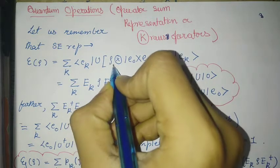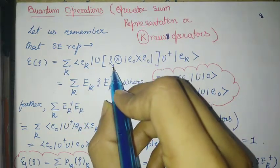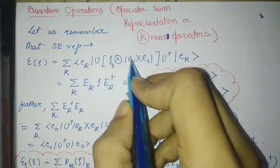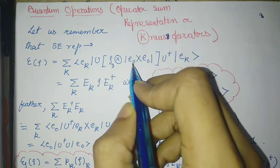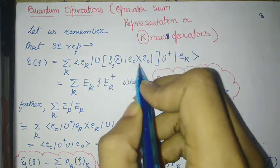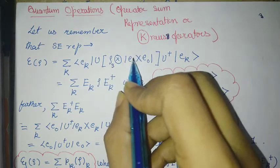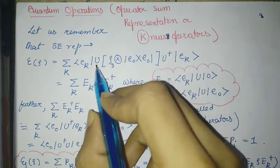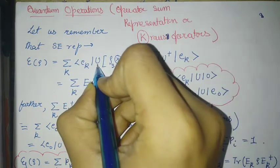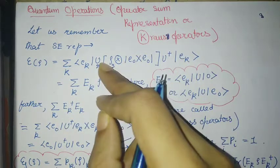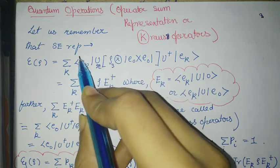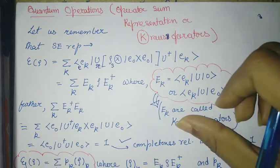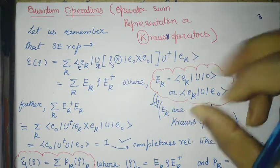So this is the quantum operation. The system — which can be system one and two, so it can be two different systems — is this system part. This is the environment part, which is taken without loss of generality to be in a state |e₀⟩. This loss-of-generality comes from the Gram-Schmidt orthonormalization procedure. These are the unitaries acting on the system-environment. At the end I am just tracing out the environment part, where each |eₖ⟩ is an orthonormal set of bases in the environment Hilbert space.